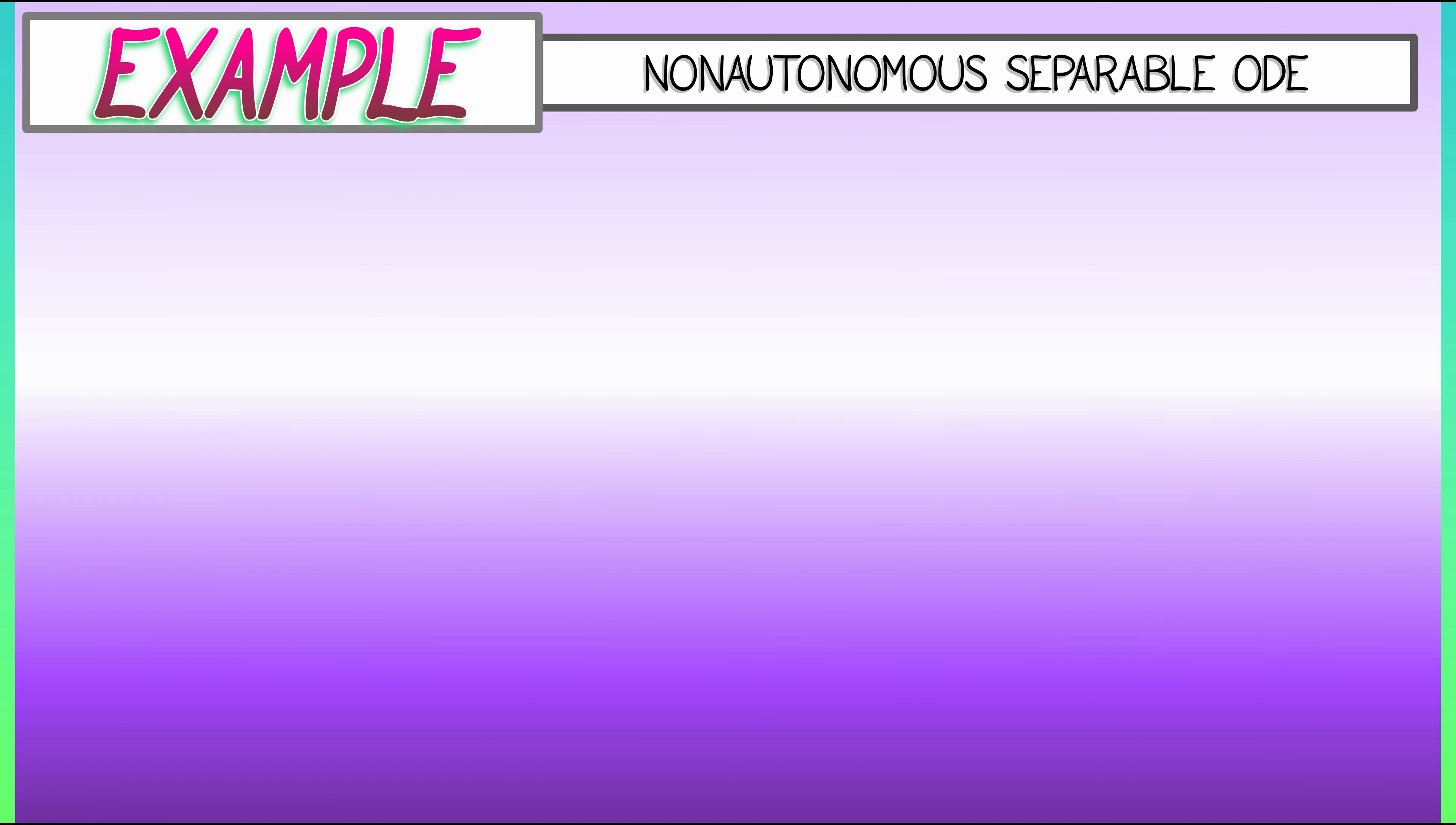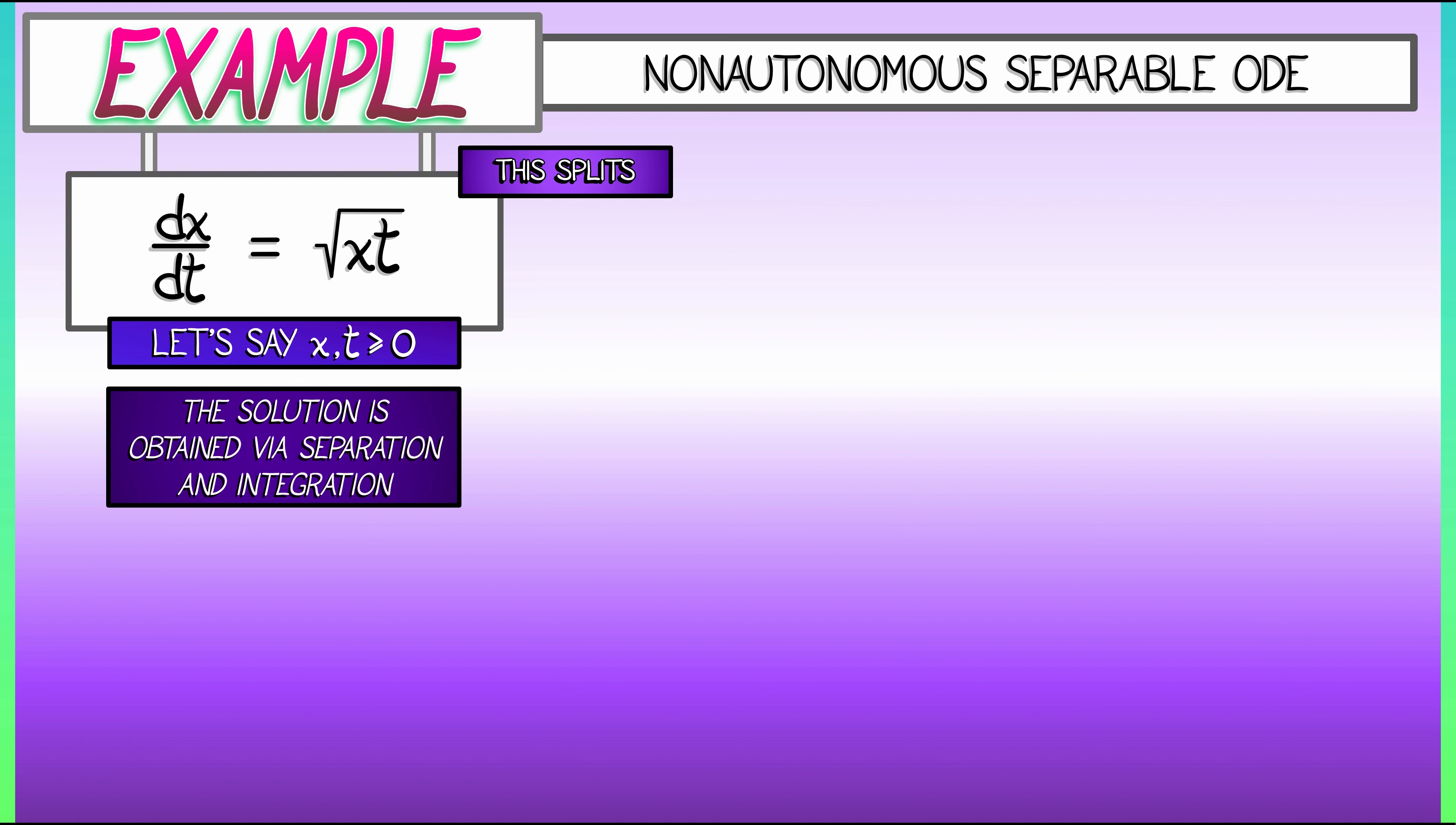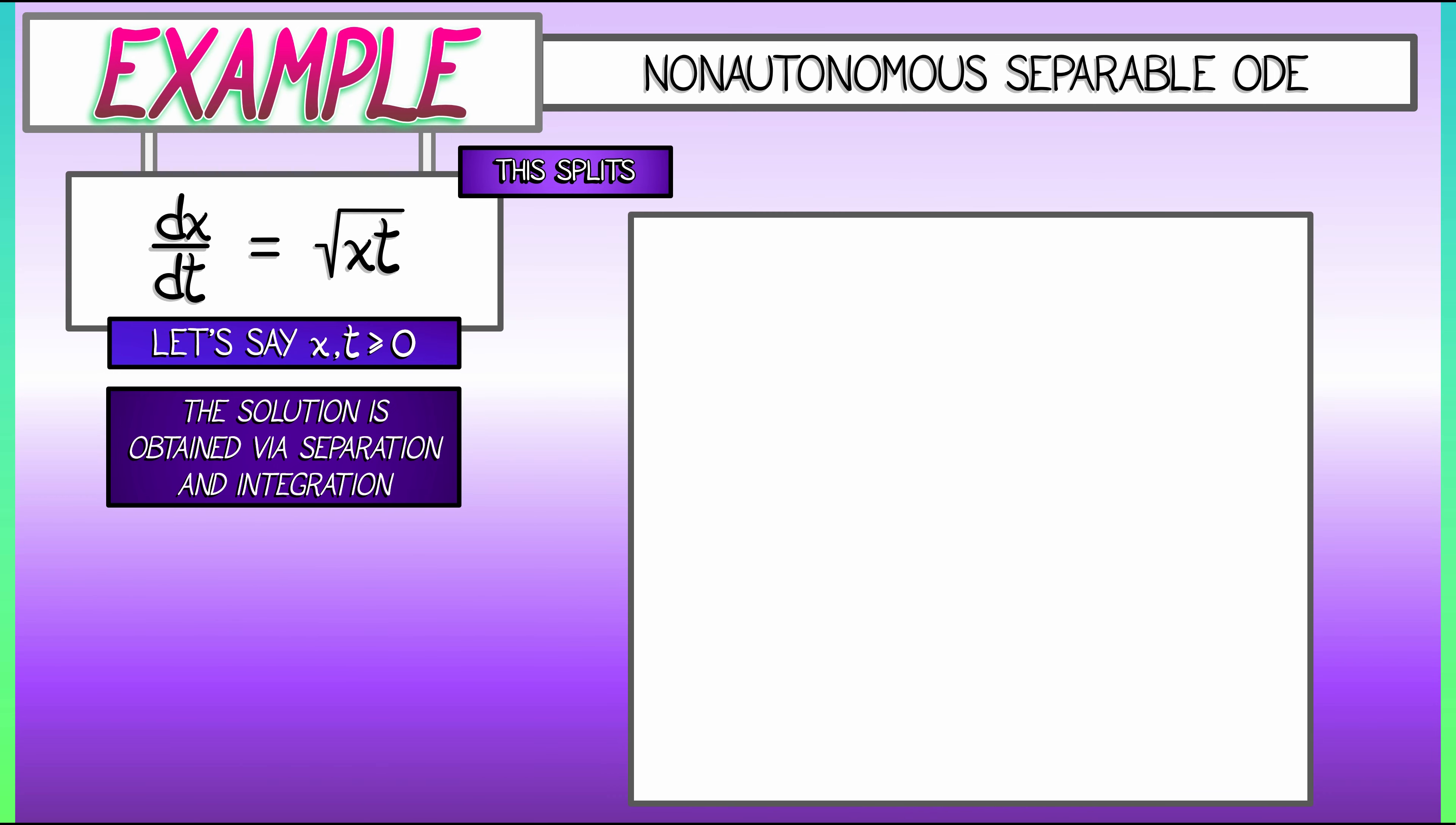Let's take a look at an example. Consider the following non-autonomous, separable, ordinary differential equation: dx/dt is equal to the square root of x times t. Let's say that x and t are both positive, in order to make sense of the right-hand side. This right-hand side definitely splits into a function of x times a function of t. Let's do that multiplication, that division. What do we get on the left? On the left, we get x to the negative one-half times dx, and on the right, we have t to the positive one-half times dt.